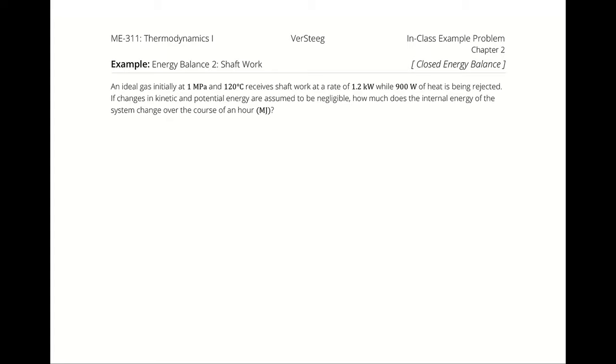An ideal gas initially at 1 megapascal and 120 degrees Celsius receives shaft work at a rate of 1.2 kilowatts, while 900 watts of heat is being rejected. If changes in kinetic and potential energy are assumed to be negligible, how much does the internal energy of the system change over the course of an hour?